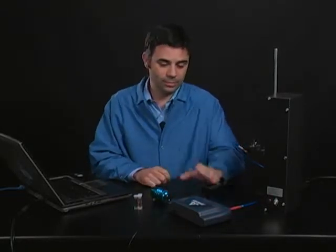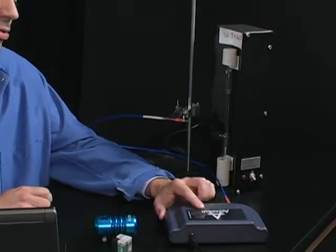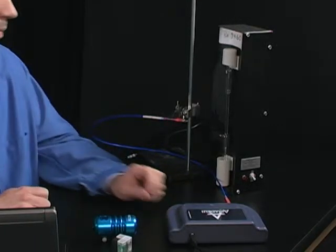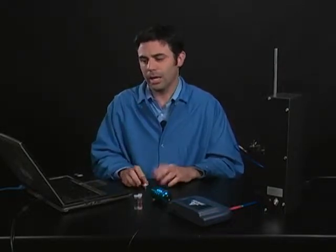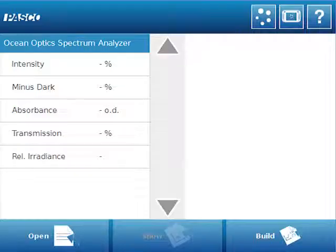Let me show you how we can use our introductory Amadeus spectrometer from OceanOptics in a chemistry setting. First, a little bit about how we're going to set this up. We're going to use this through SparkView, and when the Amadeus is plugged in, it automatically gives us these options: intensity, minus dark, absorbance, transmission, and relative irradiance. We're not going to look at all of those, we're going to look at some of them.